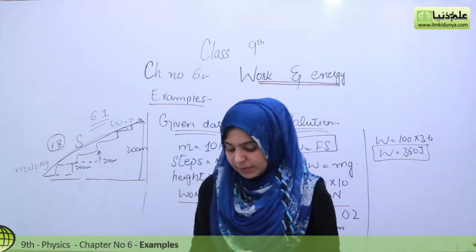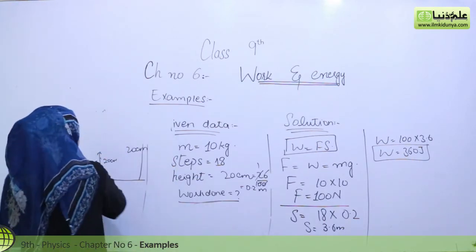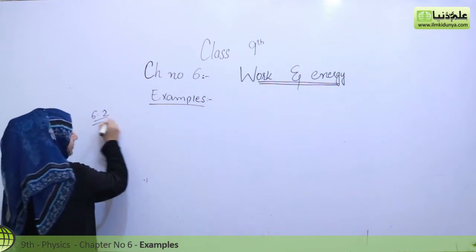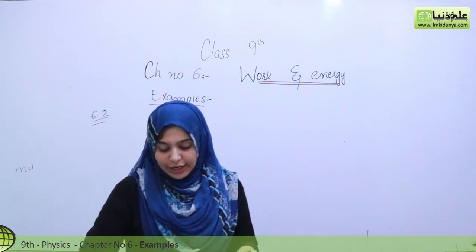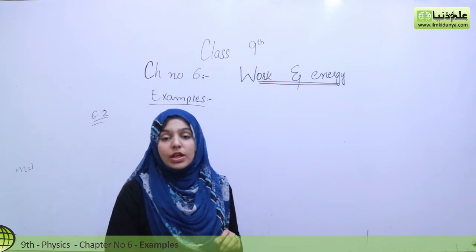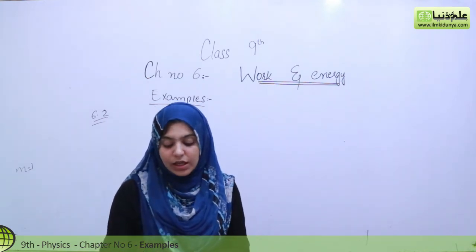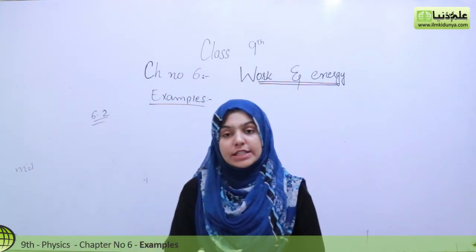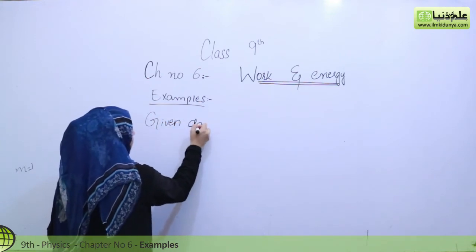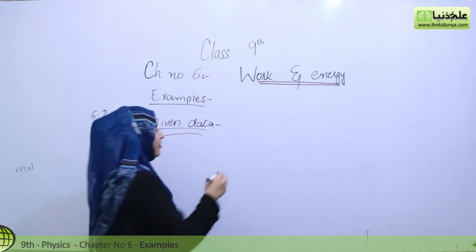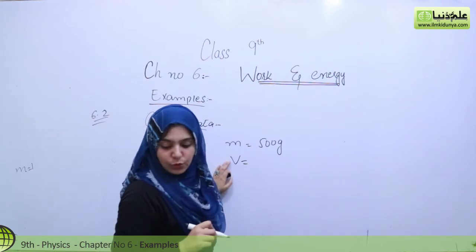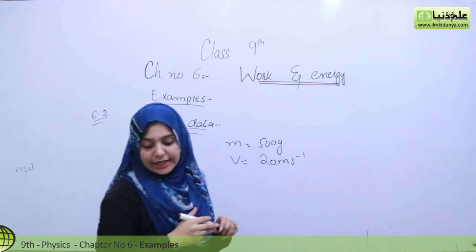The next example is 6.2. A stone of mass 500 grams strikes the ground with a velocity of 20 meters per second. How much is the kinetic energy of the stone at the time it strikes the ground? Mass given is 500 grams, velocity is 20 meters per second, and we have to find out the kinetic energy.